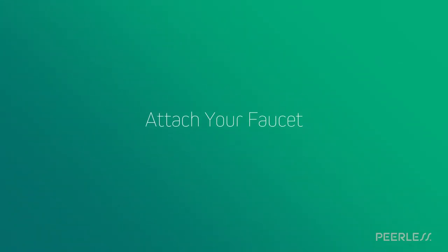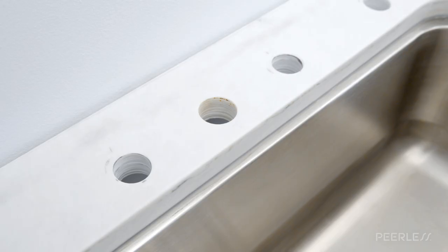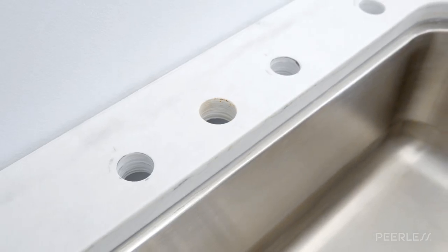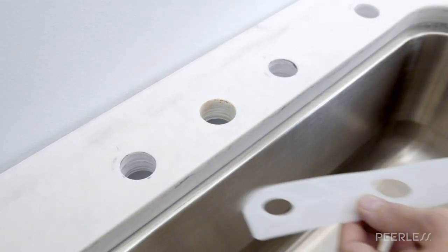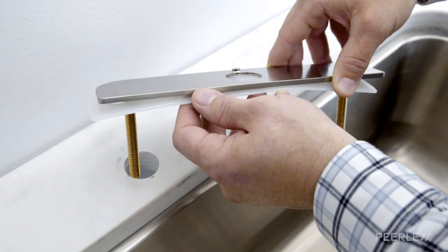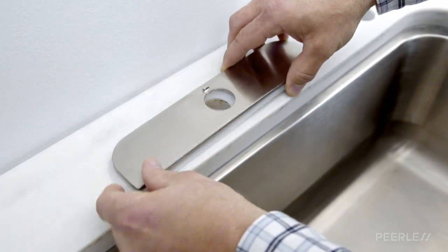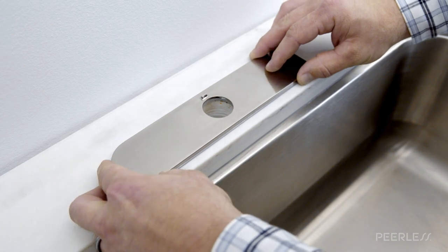To begin, first detach your faucet. Since our sink has three holes, we will use a wide escutcheon. If you are using an escutcheon, make sure that the gasket is properly seated under the escutcheon, then place it on the sink.